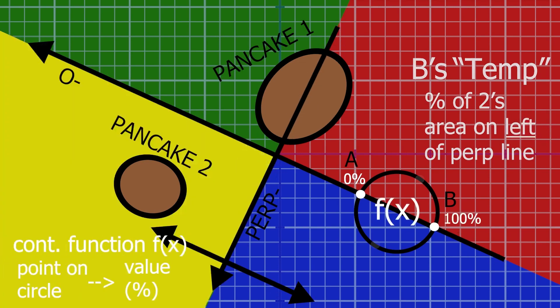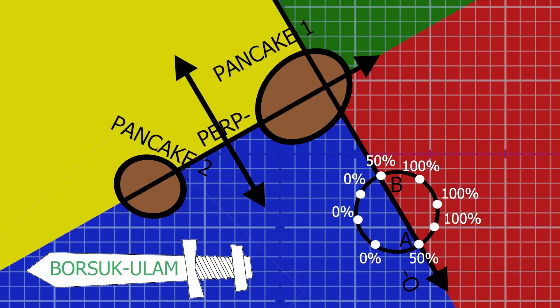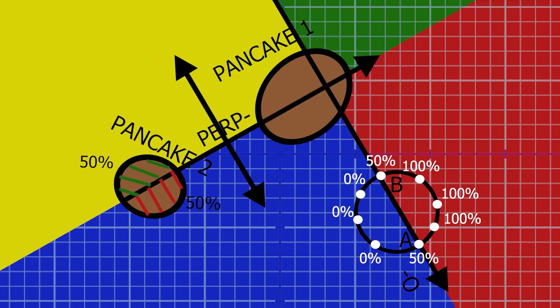And here's our continuous function from before. Borsak-Oolem proves that A and B will once have the same value, which is the place where the perpendicular line splits Pancake 2 in half.